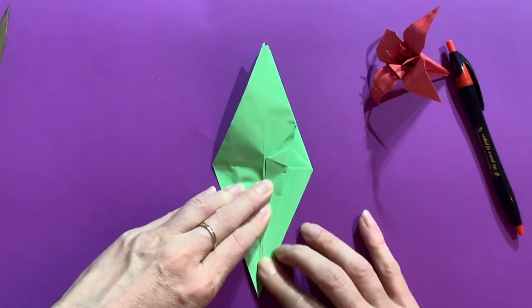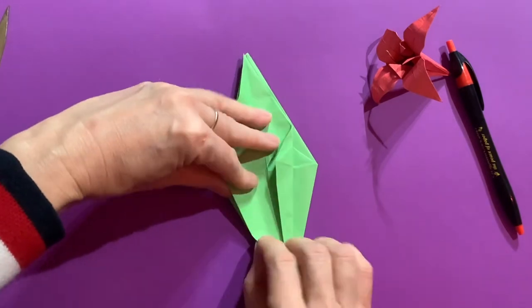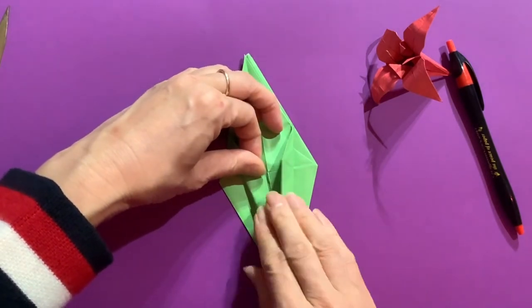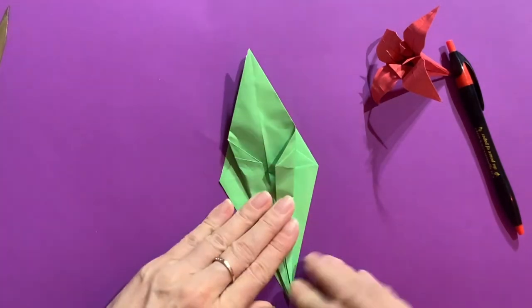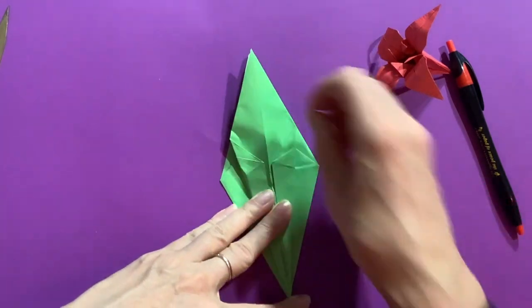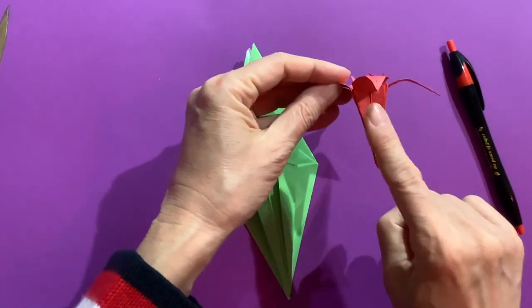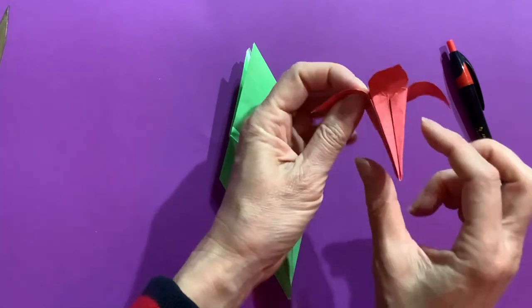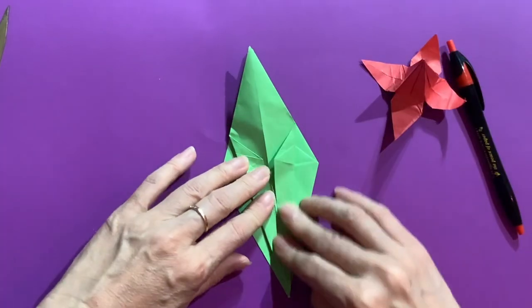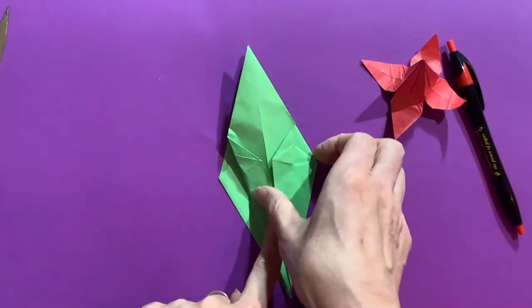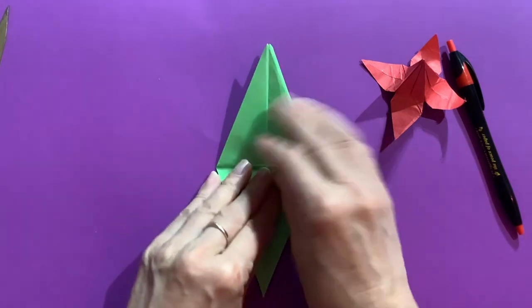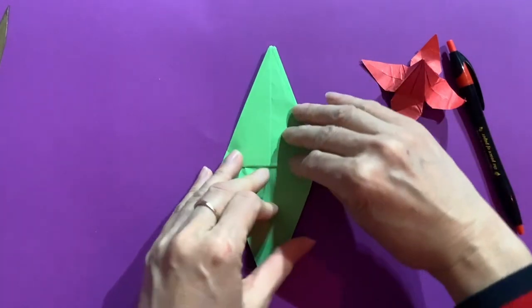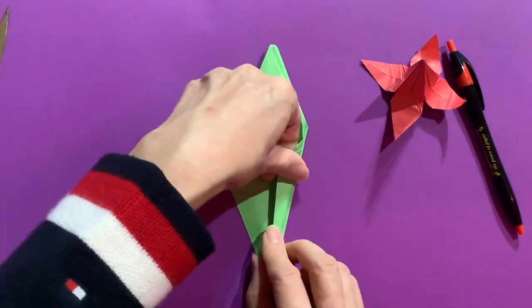And do the same process. Fold to the vertical center. Same way. So this is my third surface. There are four surfaces. One, two, three, four. So there must be one more which is on the bottom. Turn it over to the back side. And do that.